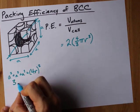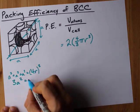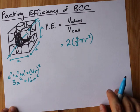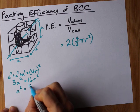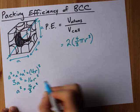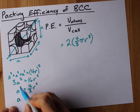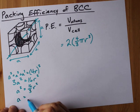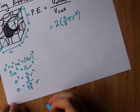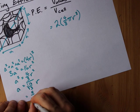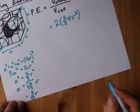This is three a squareds and this is sixteen r squareds when you expand it out. That gives me a squared is sixteen thirds of r squared. And a itself, if you square root both sides, is the square root of sixteen thirds times r. And you can simplify that if you're into it. It's four over root three times r.